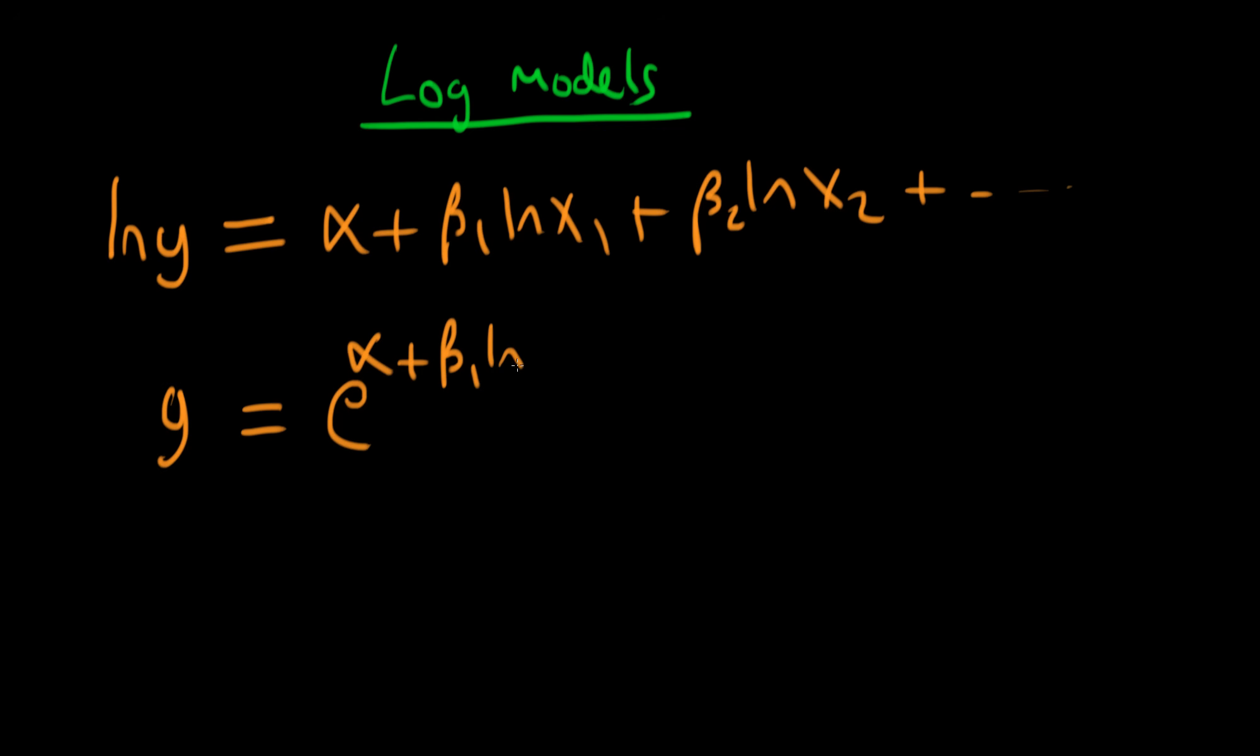So the right hand side now becomes e to the power alpha plus beta 1 times log x1 plus beta 2 times log x2. Okay, can I simplify that further?